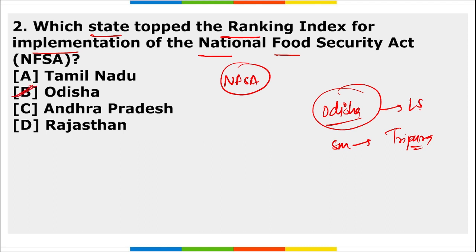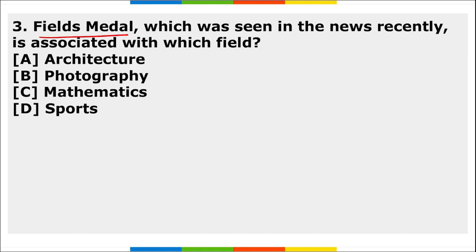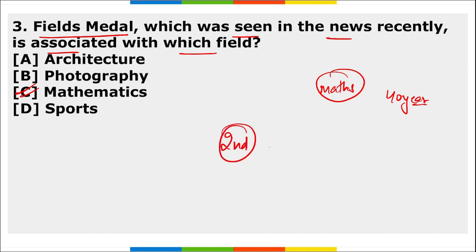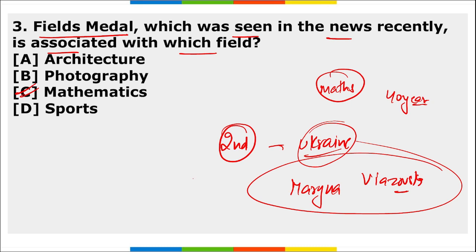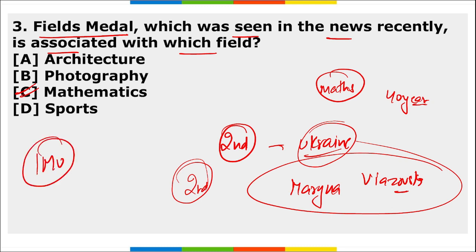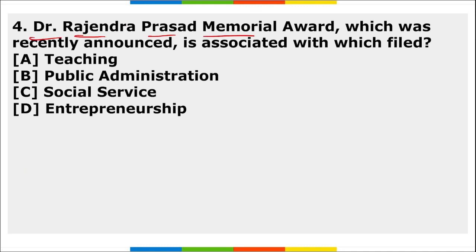Next MCQ: The Fields Medal is given in mathematics to individuals below 40 years of age. Recently, Mariana Viazovska, a Ukrainian mathematician working in Switzerland, became the second woman to be awarded the Fields Medal. She was one of four recipients. The award is presented by the International Mathematical Union (IMU).